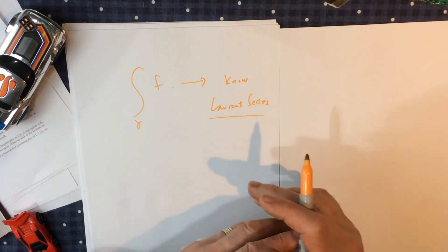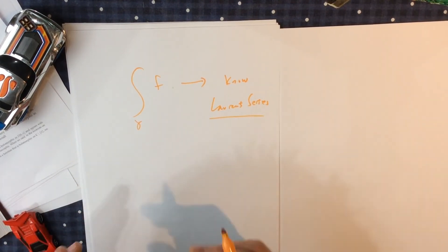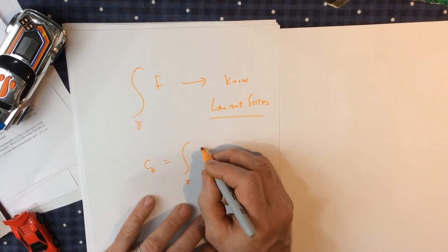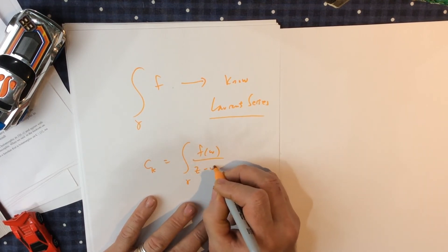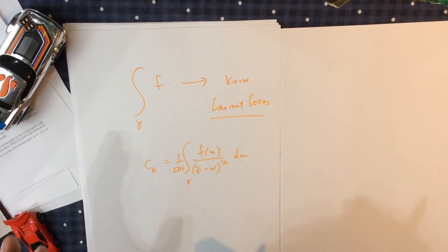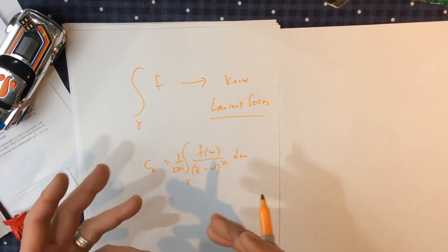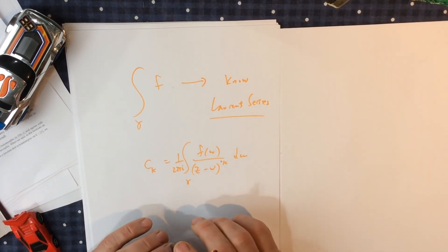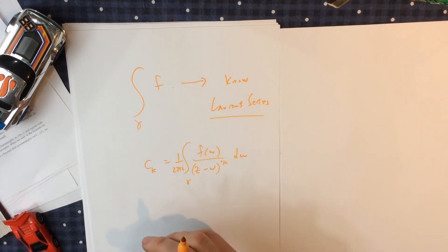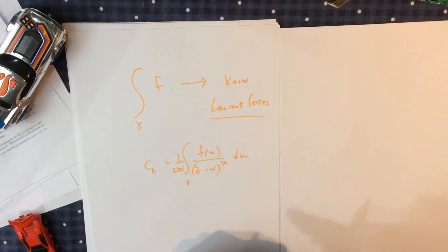There is an additional subtlety when the Laurent series is not obvious. There is a theorem stating that the coefficients of the Laurent series are given by 1 over 2 pi i times the integral of f(w) over (z minus w) to the minus k power dw. This is the Laurent series formula, which looks exactly like the Taylor series formula and allows you to calculate every coefficient in the Laurent series. But like Taylor series, you can use tricks.